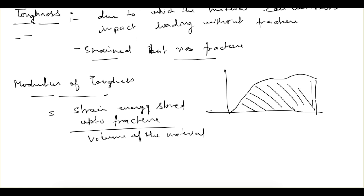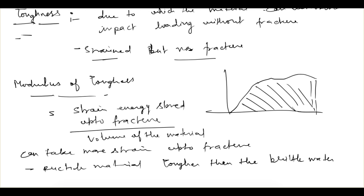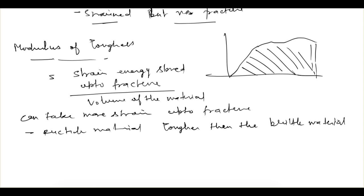So which material would be tougher? The material which can take more strain up to fracture. With that logic, ductile materials would be tougher than brittle materials — for example, mild steel would be tougher than cast iron.